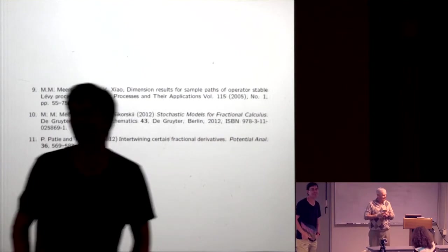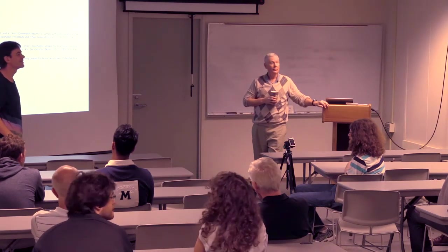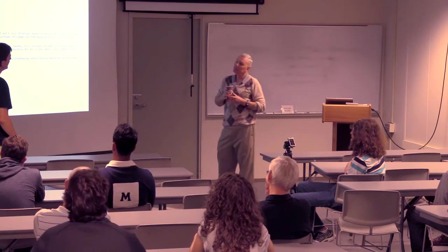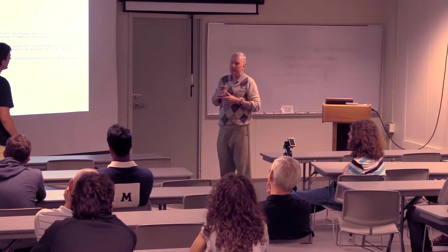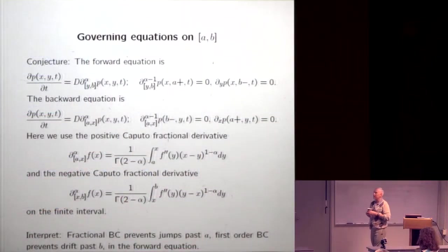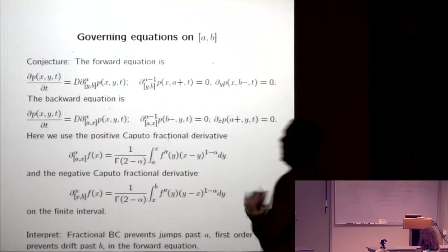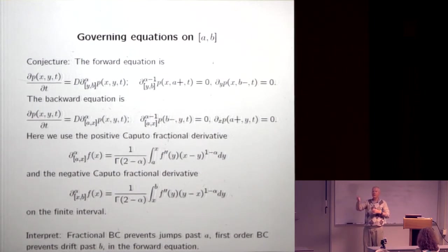Q&A: Regarding a two-sided stable process — for the one-sided case I showed here, you get one fractional and one integer boundary condition. For the two-sided stable, you get both positive and negative fractional derivatives, and all four boundary conditions for both the forward and backward equations are fractional where the process jumps over the boundary, and integer where the process drifts through the boundary. I also have an idea about dual Markov processes that might reduce the problem, but I haven't nailed that down yet.